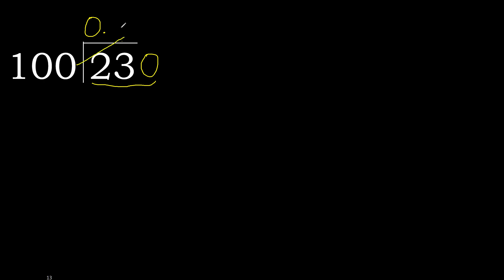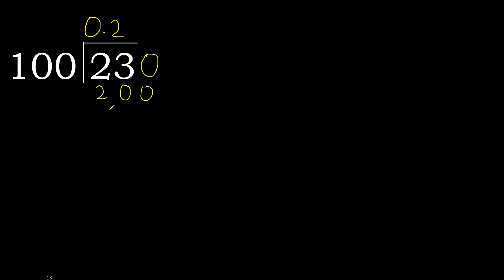Here, 100 multiplied by which number is nearest to 230 but not greater? 100 multiplied by 3 is greater, so multiplied by 2: 200 is not greater. Subtract: remainder is 30.